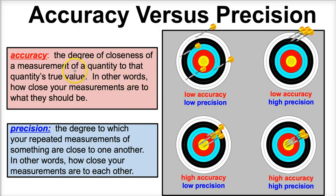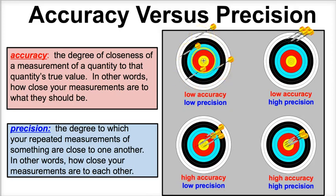Accuracy is the degree of closeness of a measurement of a quantity to that quantity's true value. In this example, the idea is to hit the bullseye, and we can see that these four darts are not very close to the bullseye at all — they are not very close to the true value. So accuracy refers to how close your measurements are to what they should be, and we clearly didn't hit it. So we have low accuracy.